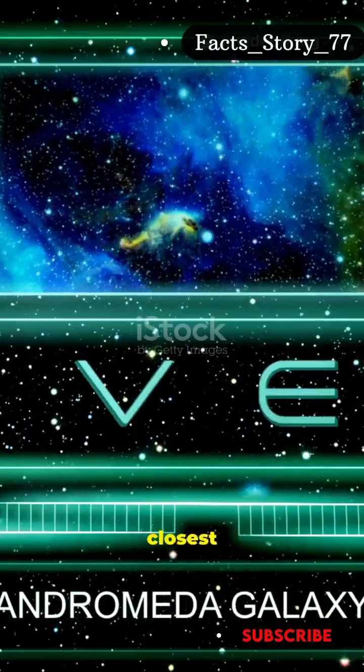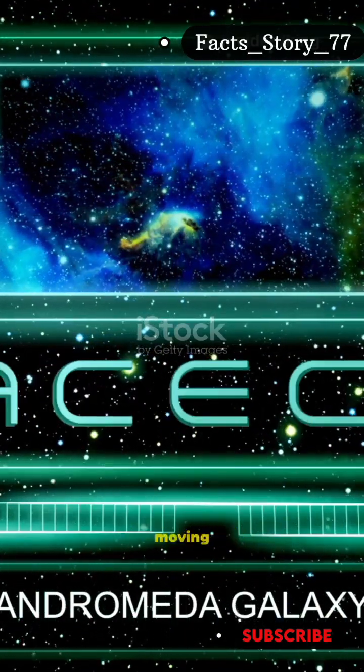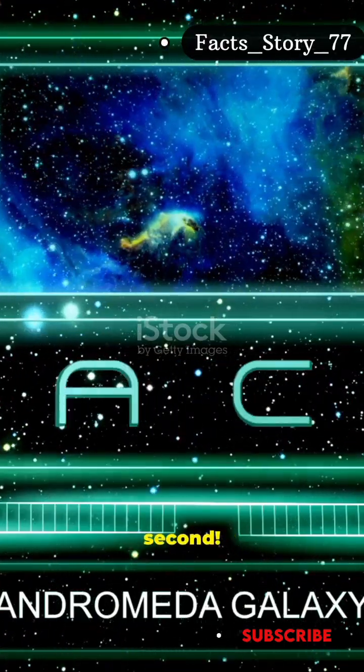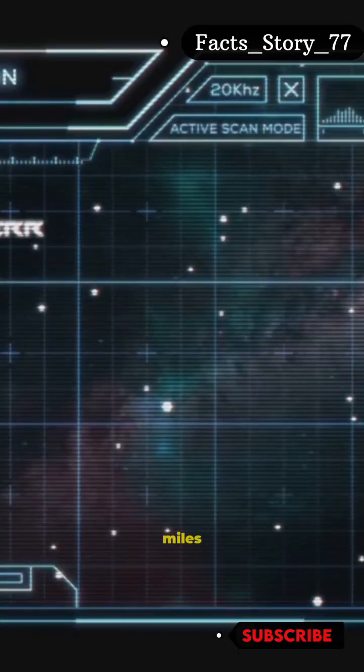The Andromeda Galaxy, our closest large galactic neighbor, is moving toward us at about 110 kilometers per second. That's roughly 250,000 miles per hour.